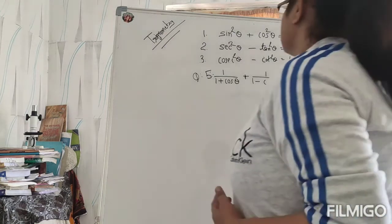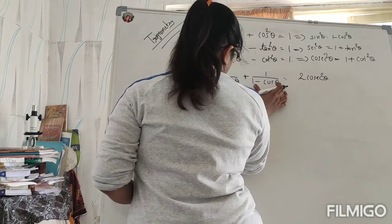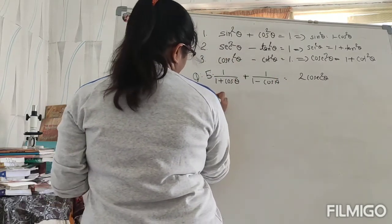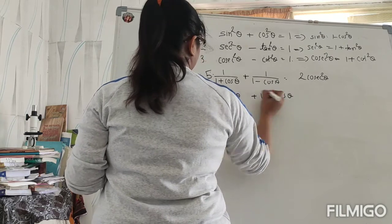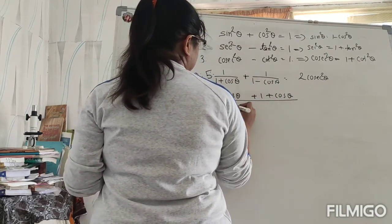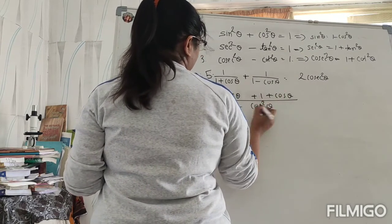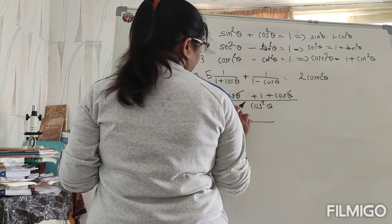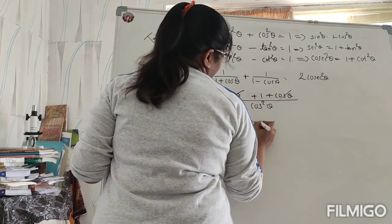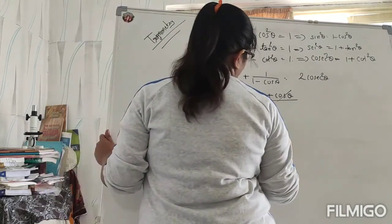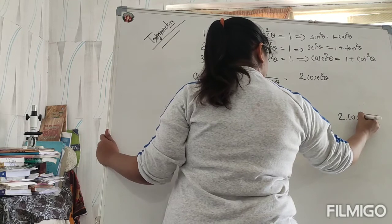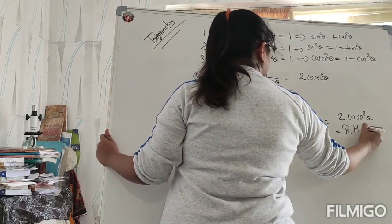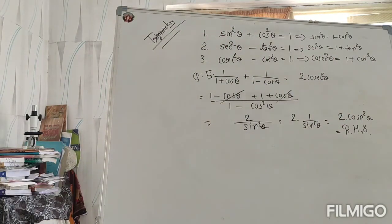Next question: 1/(1 + cosθ) + 1/(1 - cosθ). Same approach — cross multiplication gives (1 - cosθ + 1 + cosθ) all upon (1 - cos²θ). That is 2 upon sin²θ, and 1/sin²θ is cosec²θ, so the answer is 2cosec²θ, which is our RHS. I hope all these questions you have understood. Please practice nicely, and now we will move on with the level 2 questions.